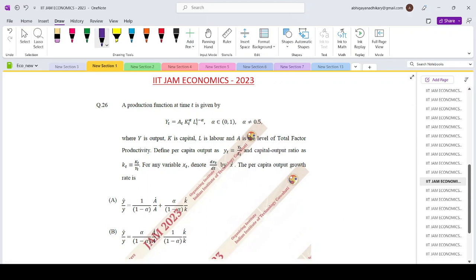Hello everyone, welcoming you to Shorab sirs classes. Today we are looking at the IIT JAM economics paper 2023 question number 26. The production function at time t is given by this expression where y is the output, k is the capital, l is labor and a is the level of total factor productivity.